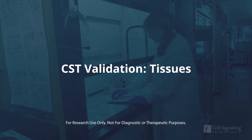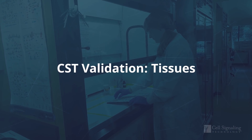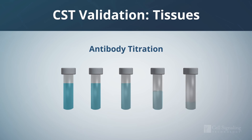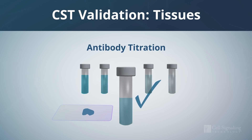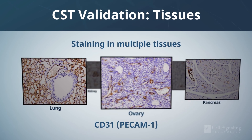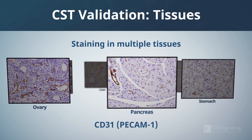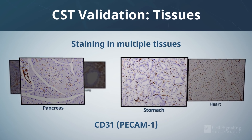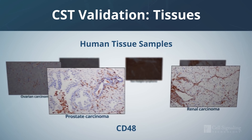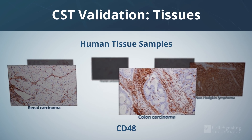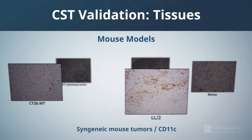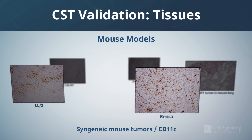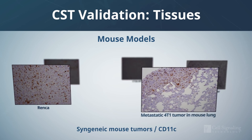Cell Signaling Technology scientists also perform IHC validation with multiple tissues. Antibody titration is performed to determine the optimal antibody dilution, which we provide in the product datasheet and web page. Antibody validation can include comparison of multiple tissue types known to express varying levels of the target protein to assess antibody specificity and performance across a broad spectrum of tissues. Immunohistochemical analysis of relevant human tissue samples is used to test human-reactive antibodies that recognize disease-relevant targets. For mouse-reactive antibodies, validation can employ normal mouse tissues, syngeneic tumors, or other mouse models.